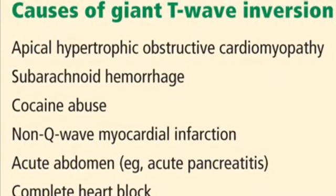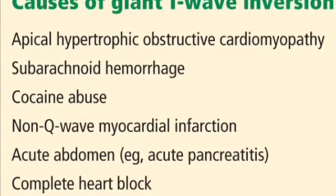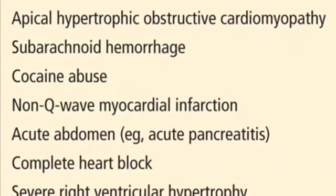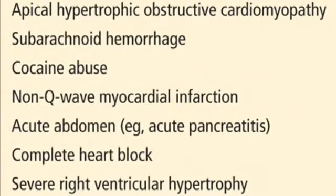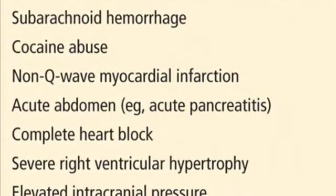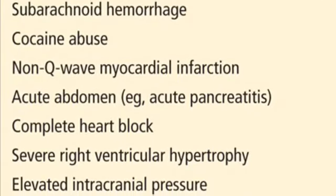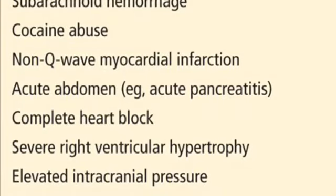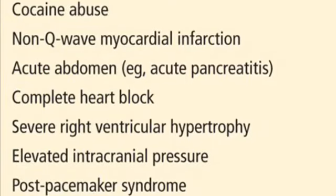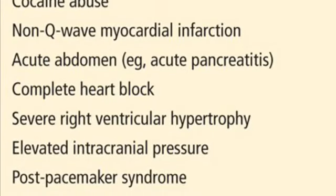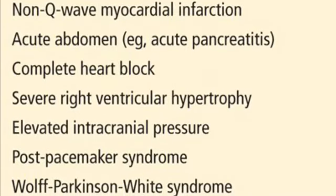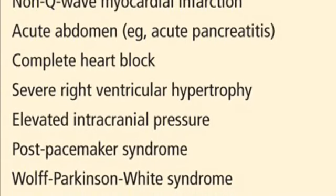Causes of Giant T wave inversion: apical hypertrophic obstructive cardiomyopathy, subarachnoid hemorrhage, cocaine abuse, non-Q wave myocardial infarction, acute abdomen such as acute pancreatitis, complete heart block, severe right ventricular hypertrophy, elevated intracranial pressure, and post-pacemaker syndrome — all cause Giant T wave inversion.